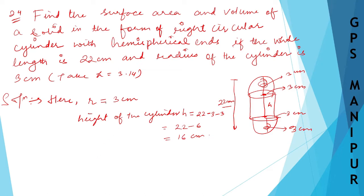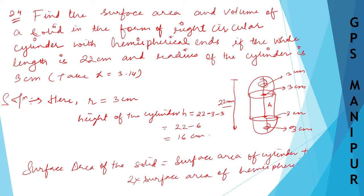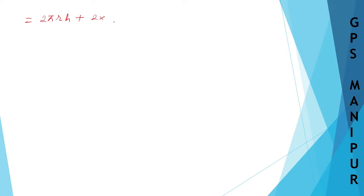Now I need to find the surface area and volume. First, surface area of the solid equals the surface area of the cylinder plus 2 into the surface area of the hemisphere. The surface area of the cylinder is 2πRH, plus 2 into the surface area of the hemisphere, which is 2πR².